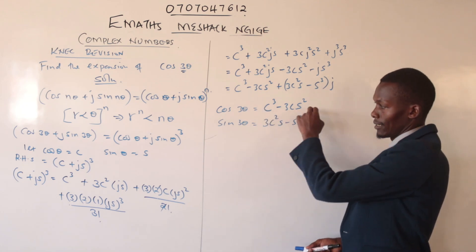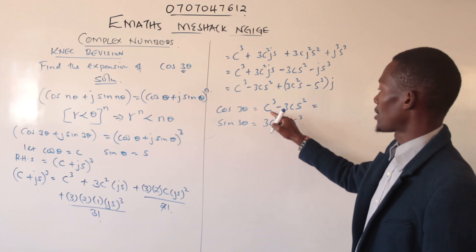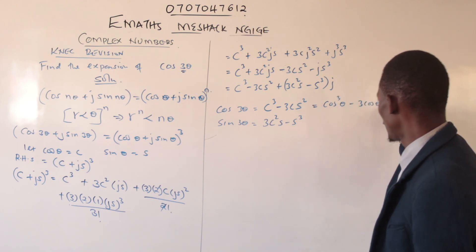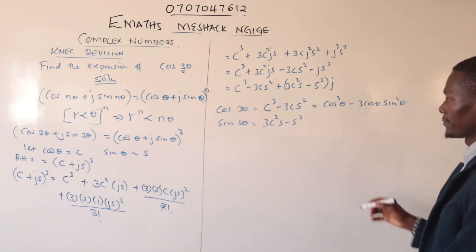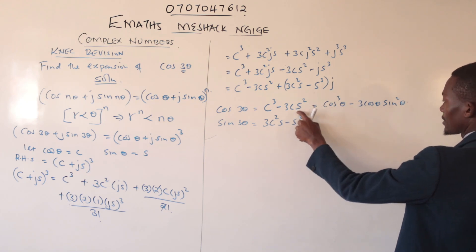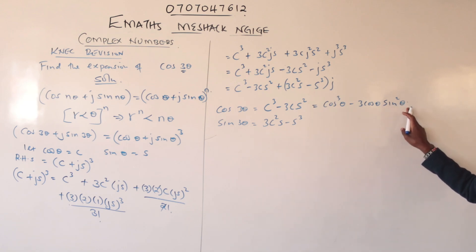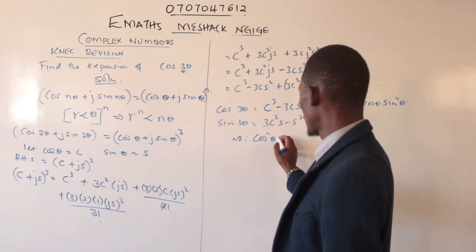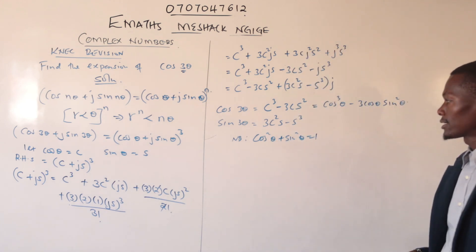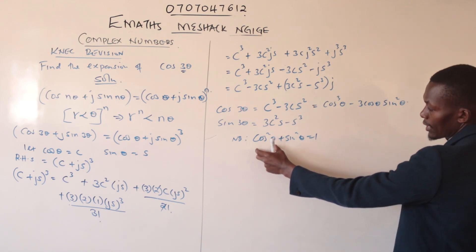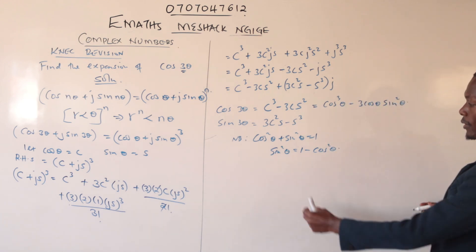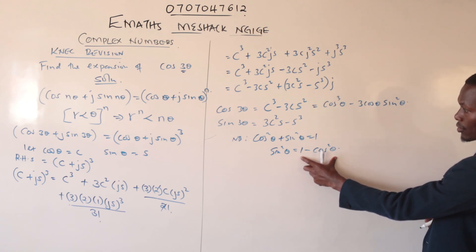Now every term in cos(3θ) should be expressed in terms of cosine only. Replacing c with cos(θ) and s with sin(θ), we have cos(3θ) = cos³(θ) − 3cos(θ)sin²(θ). We must remove the sine term. From trigonometry, cos²(θ) + sin²(θ) = 1, so sin²(θ) = 1 − cos²(θ).